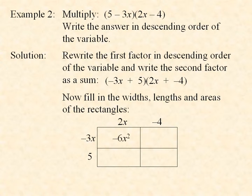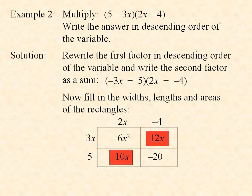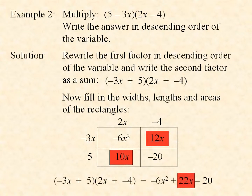Negative 3x times 2x is negative 6x squared. Negative 3x times negative 4 is 12x. 5 times 2x is 10x. And 5 times negative 4 is negative 20. These areas add up to the area of the whole rectangle, which is what that product represents. Notice that we have like terms 12x and 10x, so we can combine those, and we get for the product negative 6x squared plus 22x minus 20.